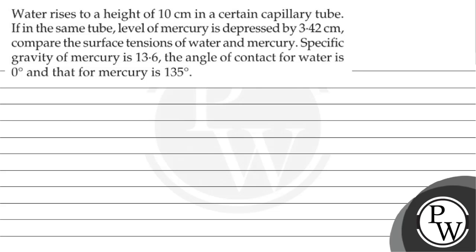Hello students. The question says that water rises to a height of 10 cm in a certain capillary tube. If in the same tube the level of mercury is depressed by 3.42 cm, compare the surface tension of water and mercury. Specific gravity of mercury is given as 13.6, the angle of contact for water is 0 degrees, and the angle of contact for mercury is 135 degrees.